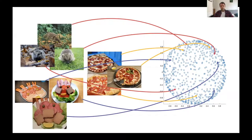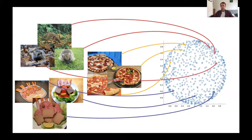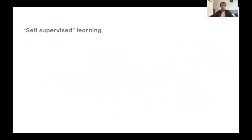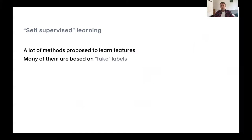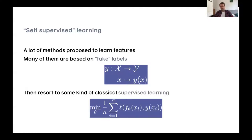What you want is to train a network that, given input images, organizes the feature space in a continuous and smooth way — for instance, the metal hedgehog and the hedgehog will be in different parts of the feature space, and images with similar content will end up together. The typical approach is self-supervised learning: training networks based on fake labels. Instead of a real supervised criterion, you invent a labeling procedure that extracts labels from the data itself, then minimize an empirical risk with those self-generated labels.